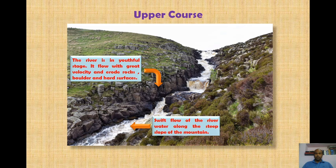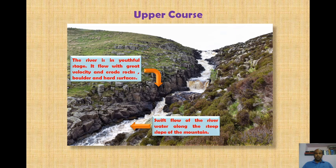In the upper course, the river is in a youthful stage. It flows with great velocity over rocks, boulders, and hard surfaces. The swift flow of river water along the steep slope of the mountain is mainly responsible for the erosion of rocks, boulders, and hard surfaces.